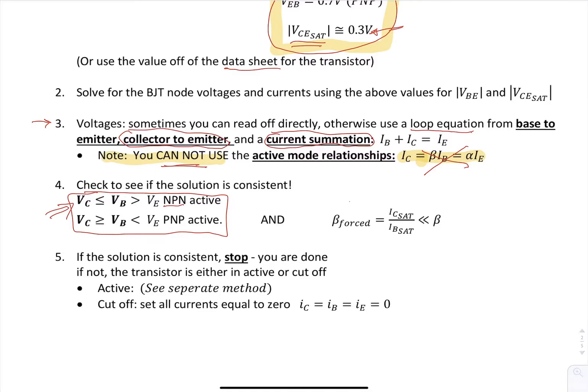You also need to look at what this value is called beta forced. So beta typically is around 150, 100. It's a high number. Beta forced will be a lot less than that number. So it can be 2, 12. That's when you know that you're in saturation.